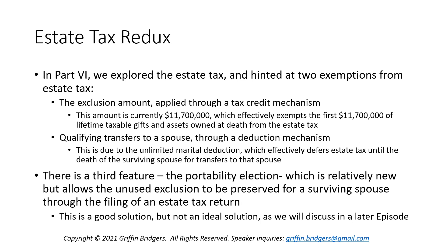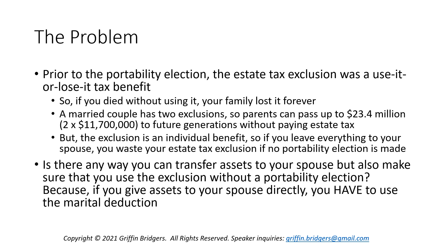There's a third feature, known as the portability election, which kind of Venn diagrams into that exclusion amount. It's relatively new — only 10 years old — but it allows an unused exclusion of the first spouse to die to be preserved for the surviving spouse through the filing of an estate tax return. That seems like a good solution, but it's not always ideal. Without a portability election, the estate tax exclusion is a use-it-or-lose-it tax benefit, meaning if you die without using it in full, your family loses it forever.